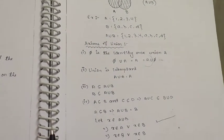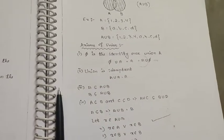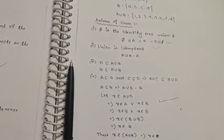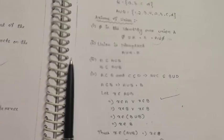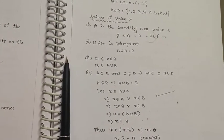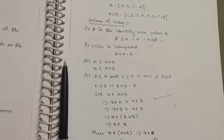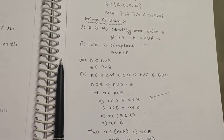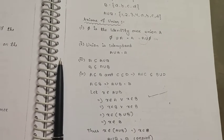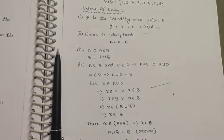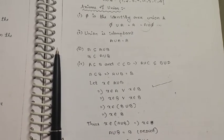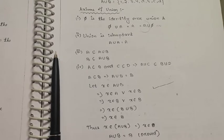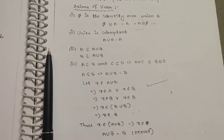Now, axioms of union. Phi is the identity element over union — that means A union phi equals A. Next, union is idempotent, meaning A union A equals A.